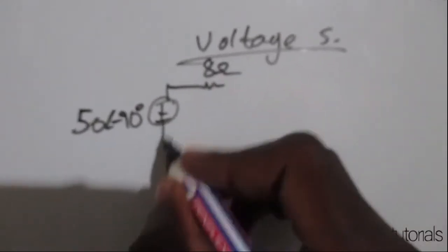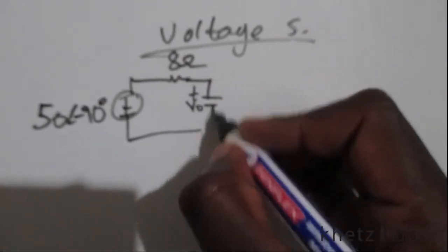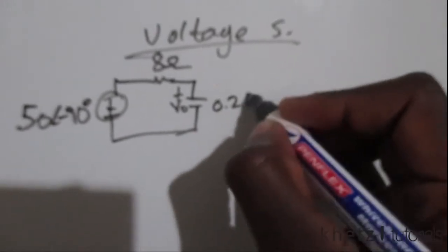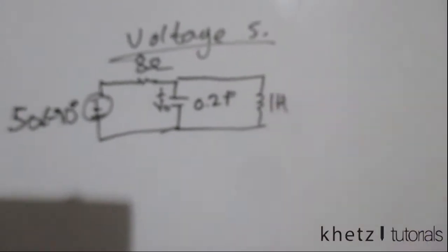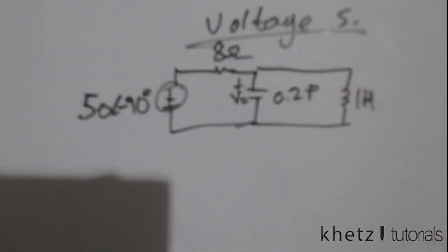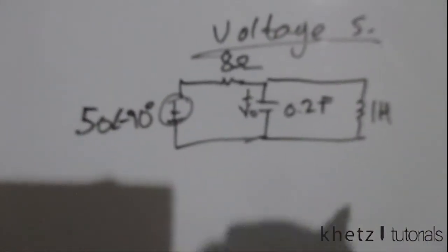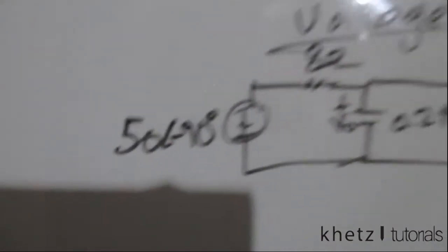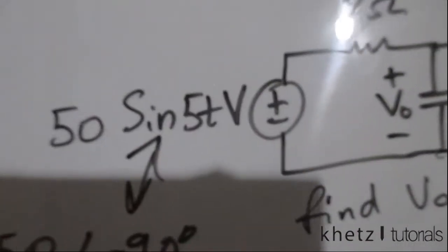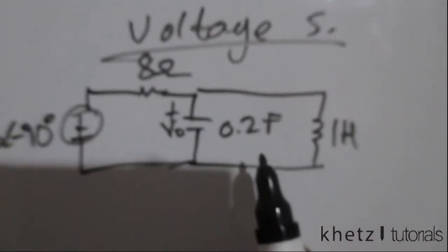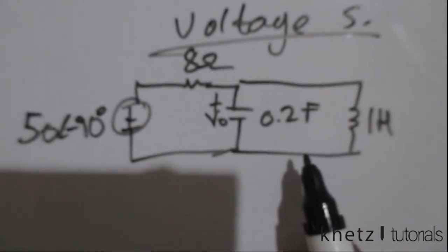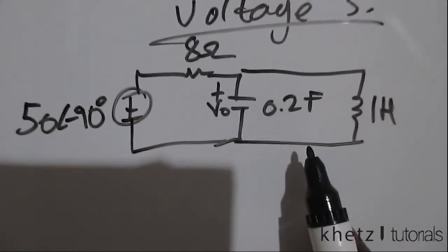We have 8 ohms up here, VO across the capacitor, 0.25 farads, and a 1-henry inductor. Even though we transformed the source into phasor form, we still use the angular frequency of 5, which is indicated in the original expression. These are raw component values and our aim is to convert them into impedances that we can work with.